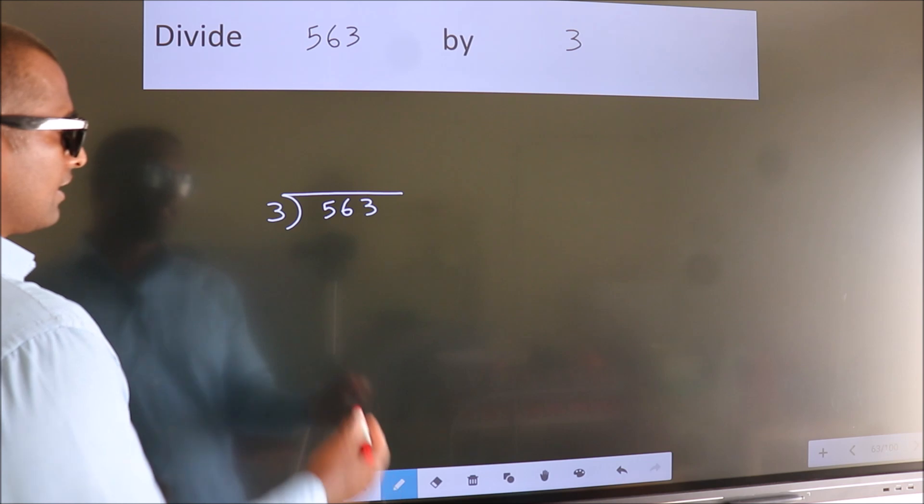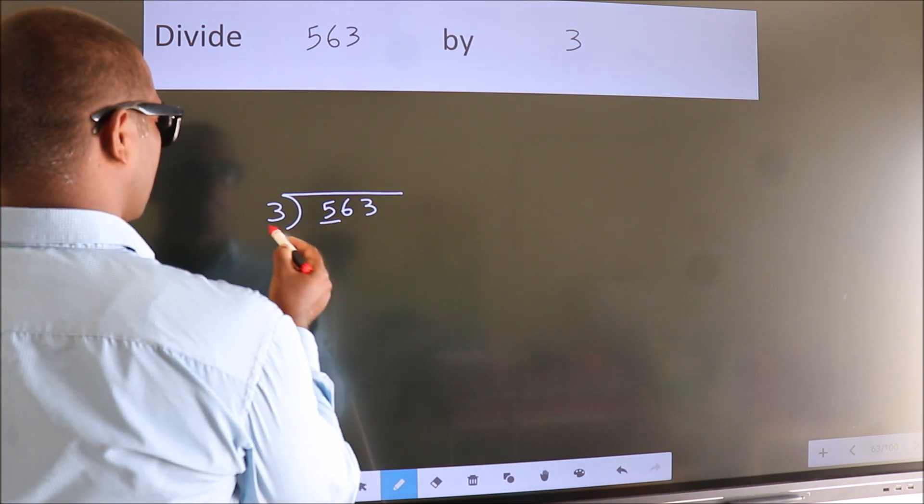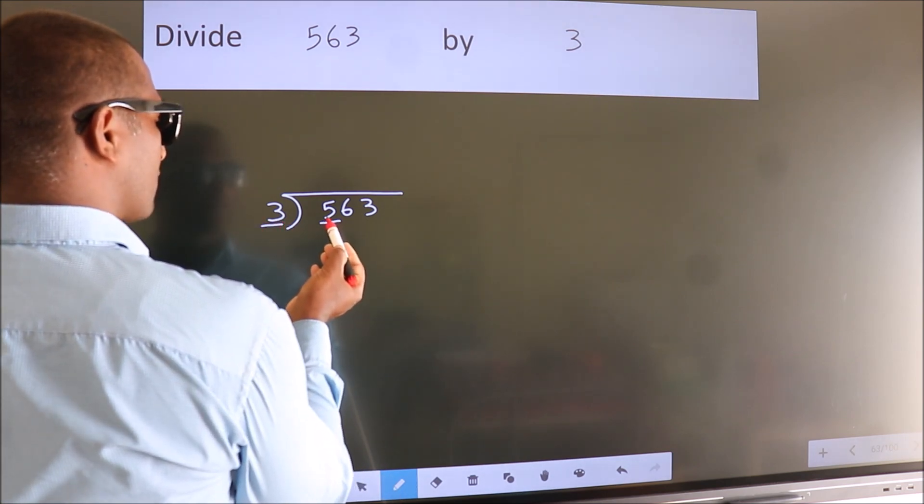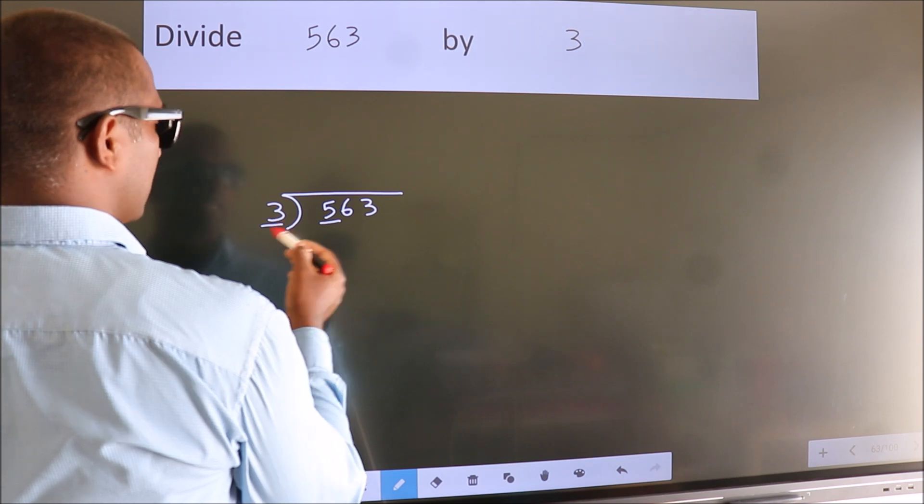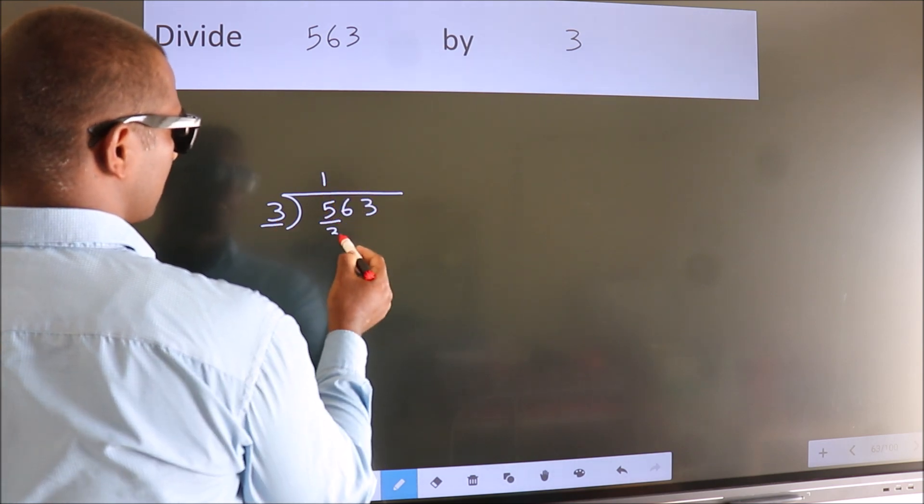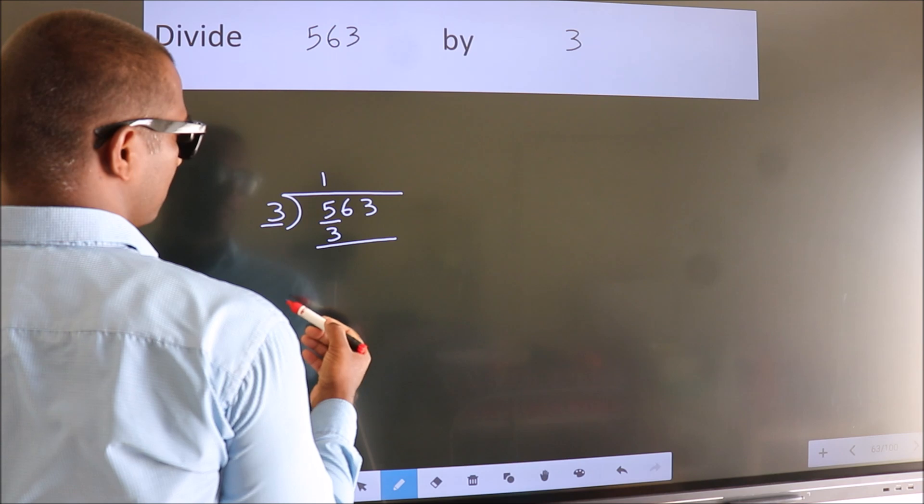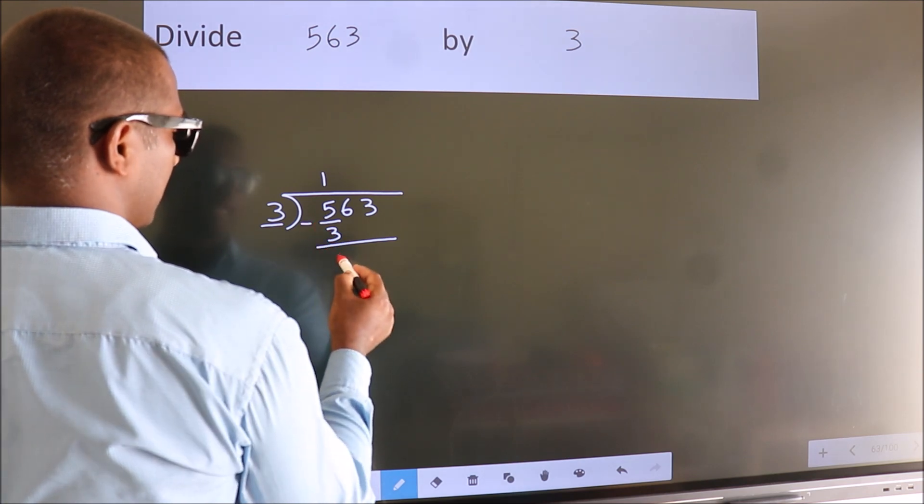Next. Here we have 5, here 3. A number close to 5 in the 3 table is 3 times 1 is 3. Now, we should subtract. We get 2.